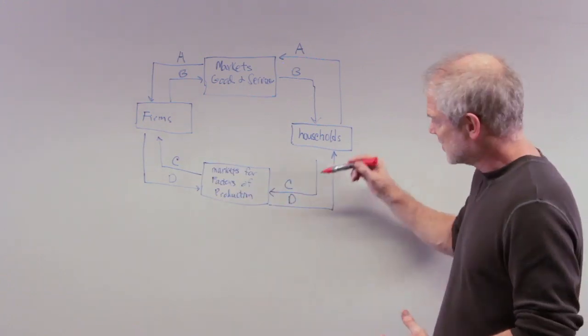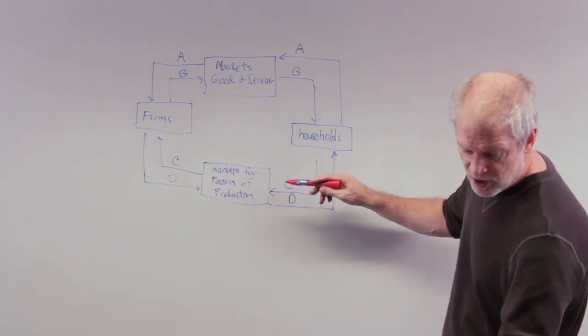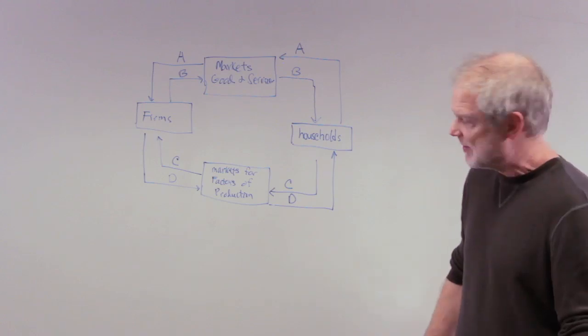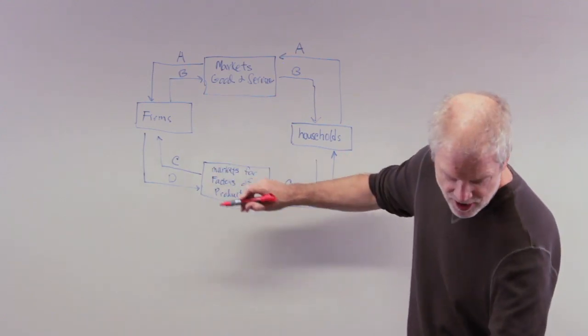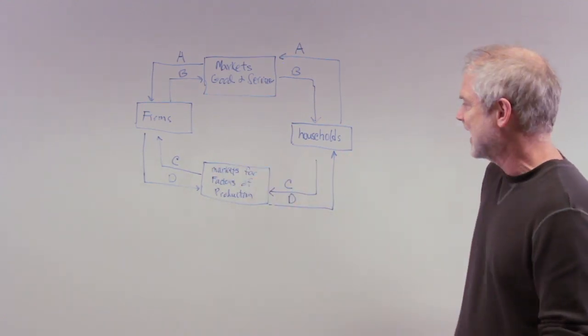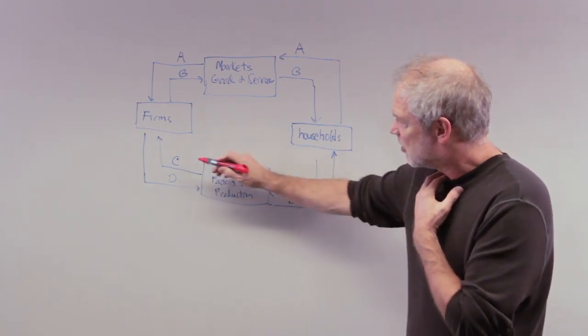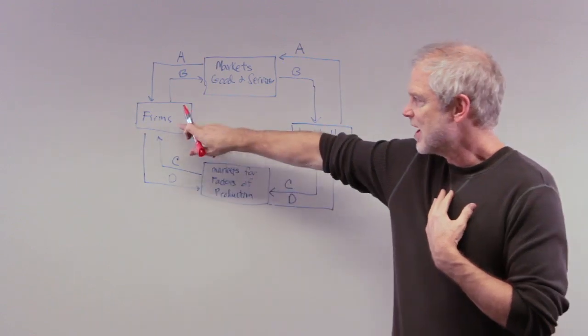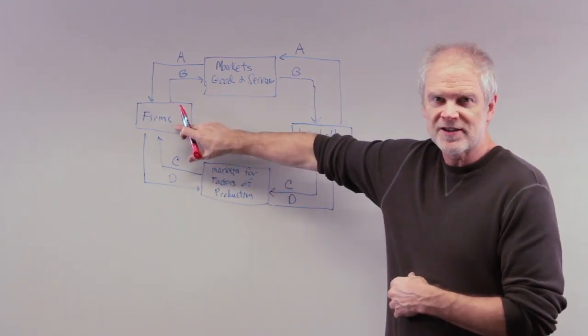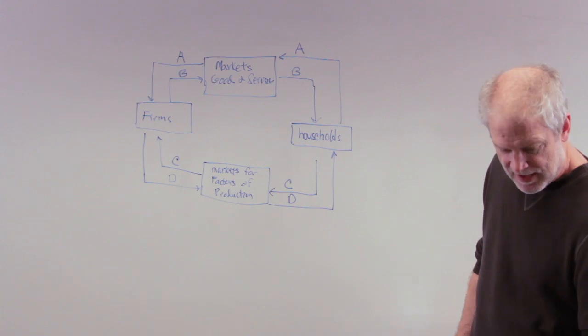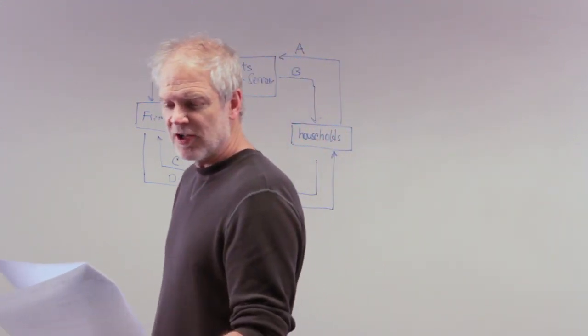So the factors of production go in. The answer is going to be C. C represents the flow of land, labor, and capital into this market and up to firms. Firms hire these workers, borrow this capital, use this land.